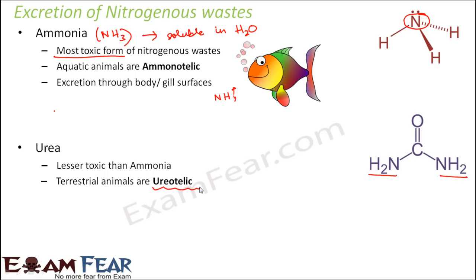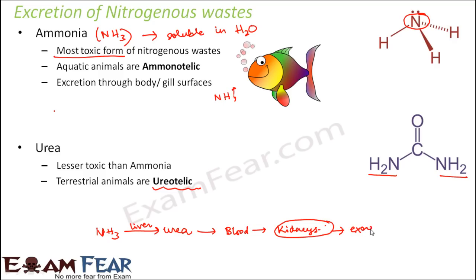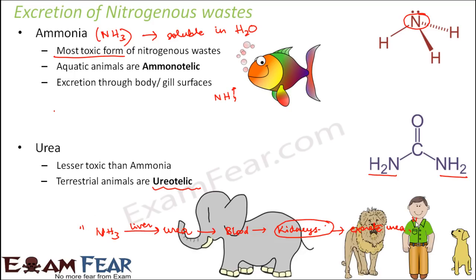Inside the body of terrestrial animals, ammonia is converted into urea in the liver. The ammonia gets converted to urea in the liver and then this urea is released into the blood. From the blood it reaches the kidneys, which are the main organs of excretion, so the kidneys excrete urea. Examples of ureotelic animals include most terrestrial animals we see around us — human beings, lion, tiger, elephant, dog, cat. Excretion in these animals happens through kidneys, which are specialized excretory organs.